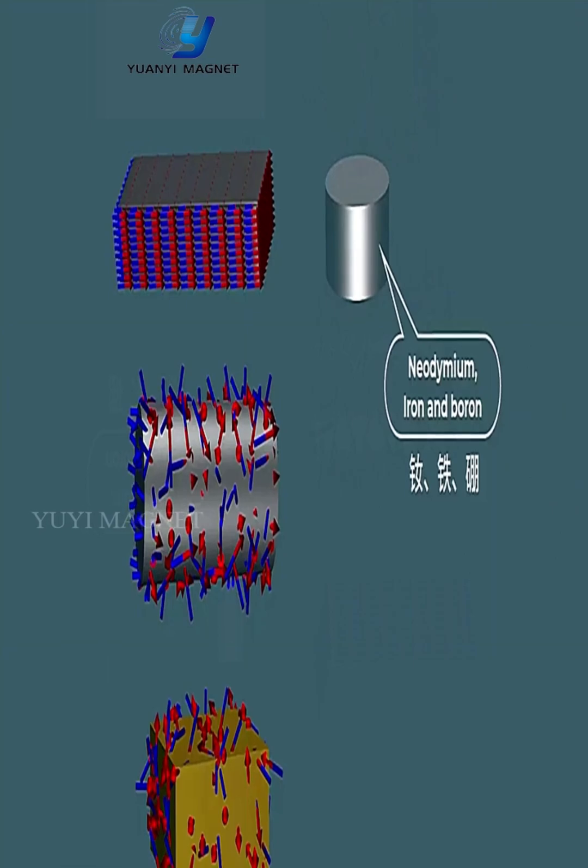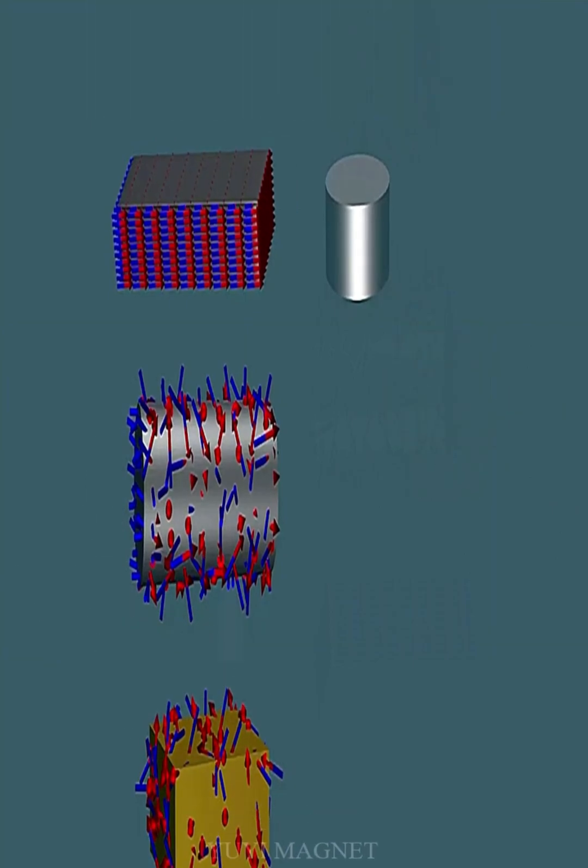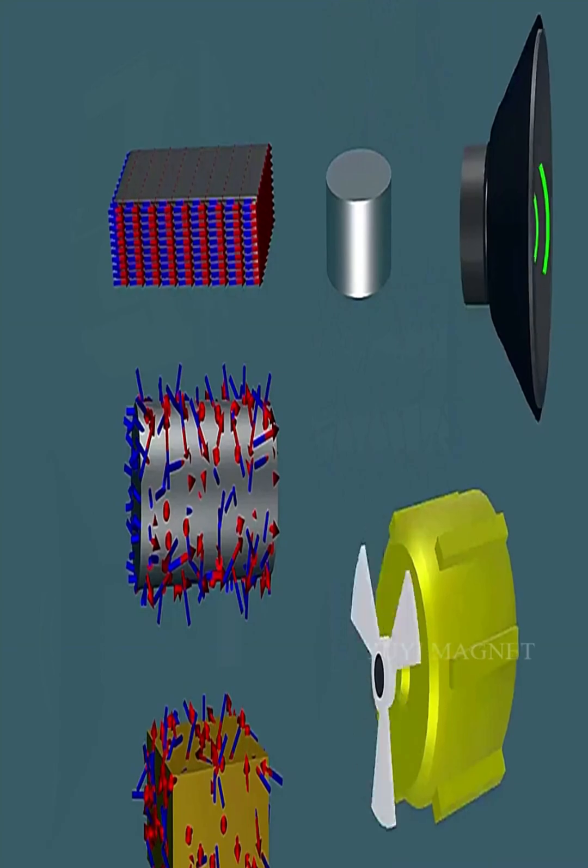However, in certain materials like ferromagnetic substances, the magnetic moments align in one direction, forming a strong magnetic field across the entire body.